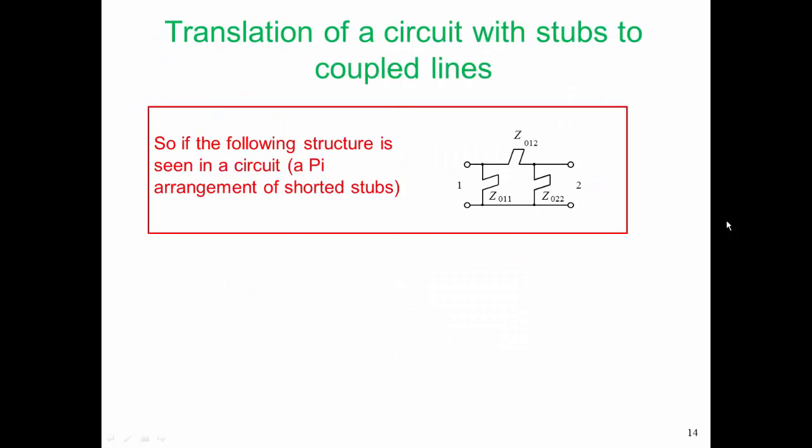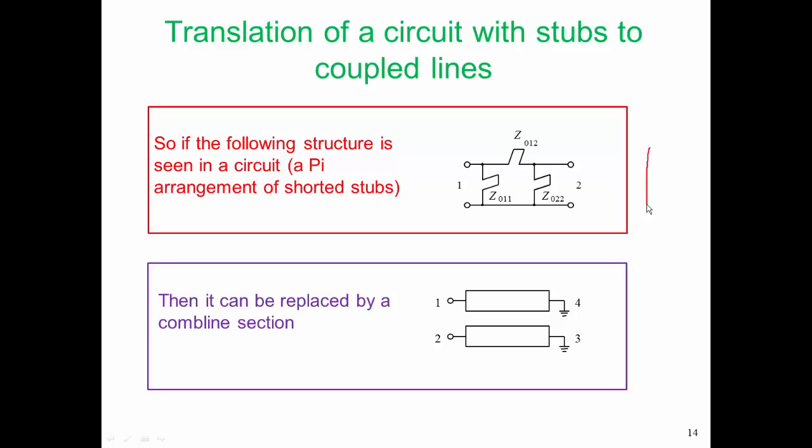Now we know that if we can develop a synthesis process that will arrive at the structure shown there on the right, that is a pi arrangement of shorted stubs, then we're going to be able to replace it by a pair of coupled lines. We have taken our process where we're trying to go from a lumped element circuit to coupled lines, and we've reduced that to a process that tries to start off with a lumped element equivalent circuit for a bandpass filter. We want to translate that and come up with a pi arrangement of stubs. Because once we have that pi arrangement, we can turn it into coupled lines. We can create that physical realization.